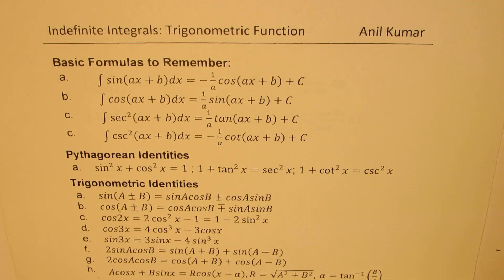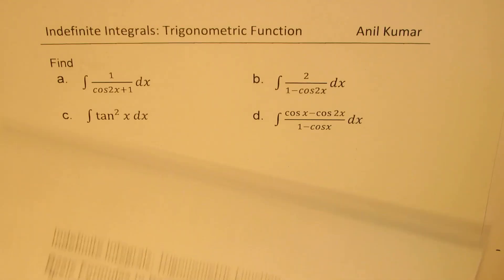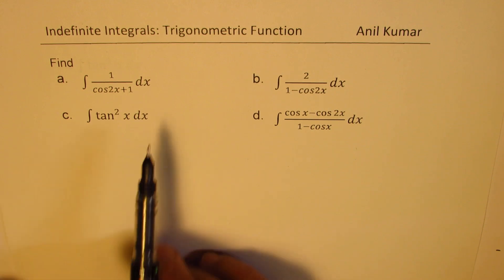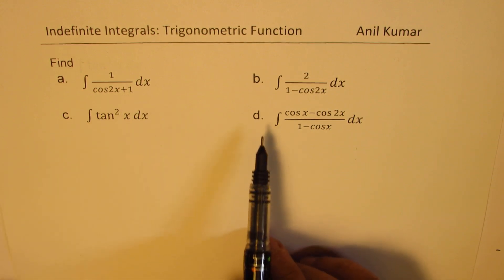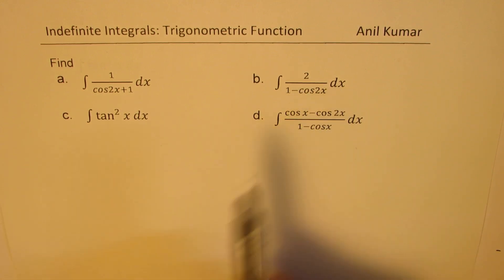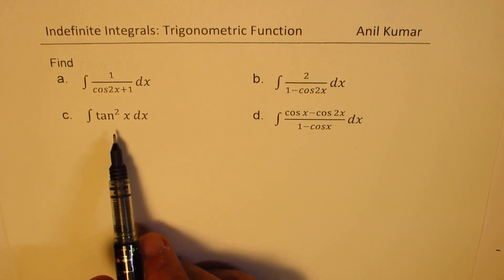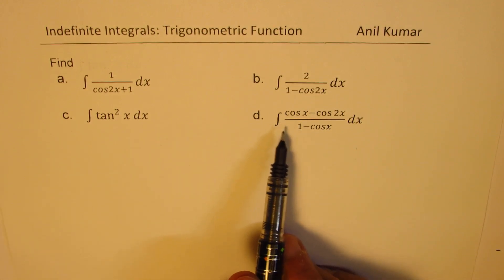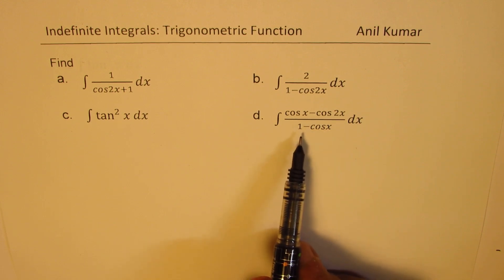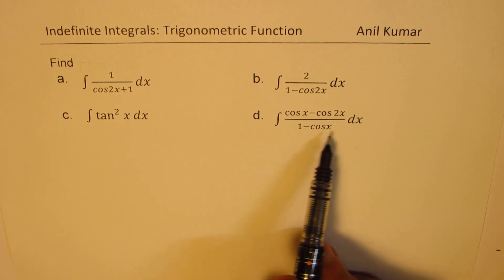With that in mind, let us take four basic questions. The questions are: find the integral of 1 over (cos 2x + 1) dx, the integral of 2 over (1 − cos 2x) dx, the integral of tan squared x, and the integral of (cos x − cos 2x) over (1 − cos x) dx.